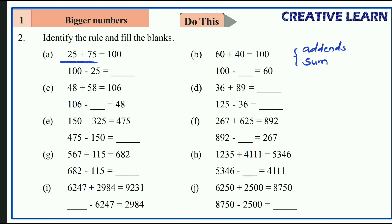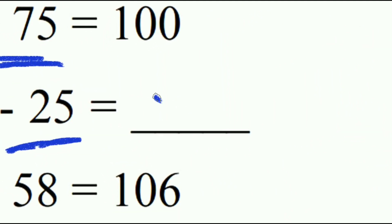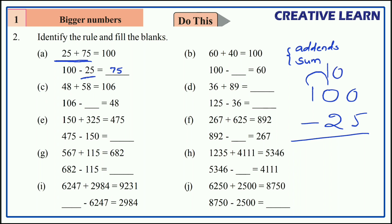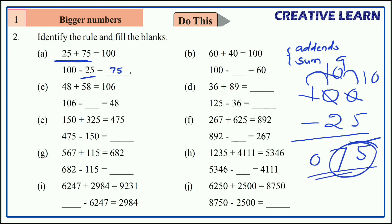When we subtract one addend from the sum — 100 minus 25 — we get the remaining addend, which is 75. Let's verify: 0 minus 5 is not possible, so we take a borrow. 10 minus 5 is 5, 9 minus 2 is 7, so the answer is 75.